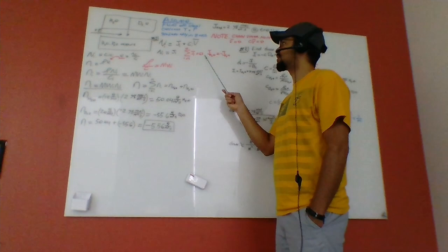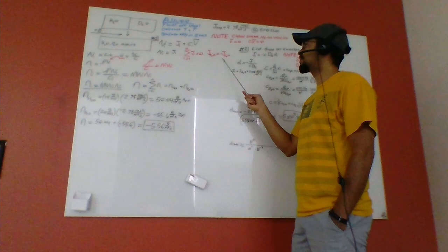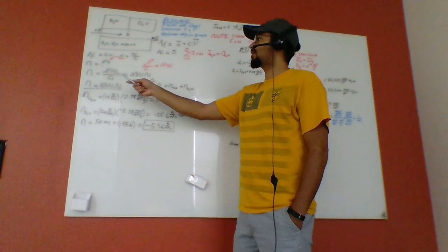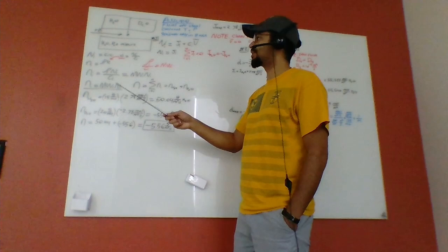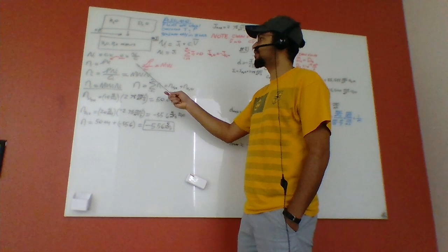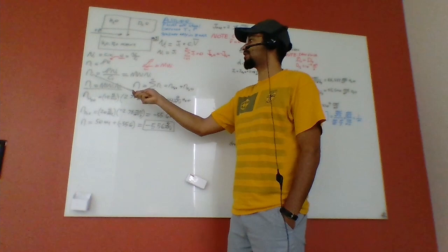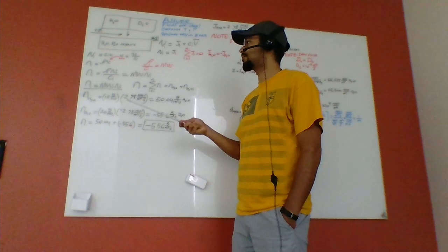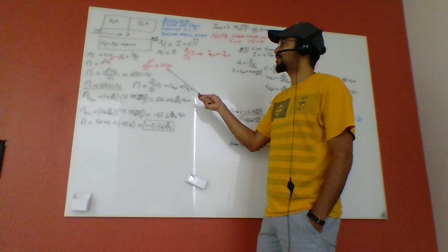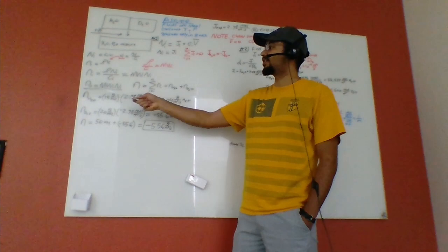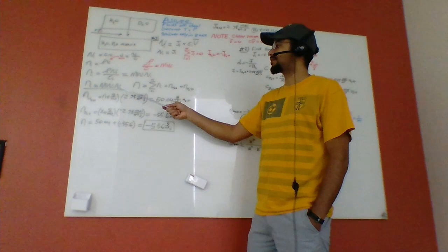We know that the sum of the molar diffusive fluxes are equal to 0, so the molar diffusive flux of H2O is equal to the negative molar diffusive flux of D2O. The definition of molar flux is equal to molar concentration times the velocity of the component. We can rearrange to find the velocity as molar flux over molar concentration, and plug that into the mass flux equation. From the definition of molecular weight as mass concentration over molar concentration, the mass flux equation becomes molecular weight times molar flux.